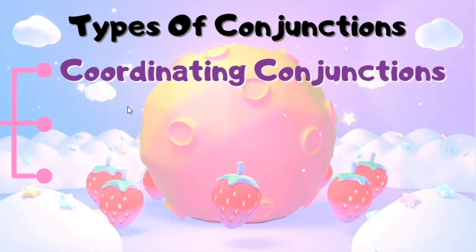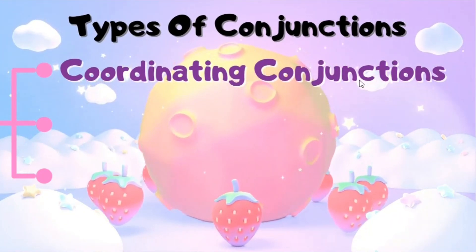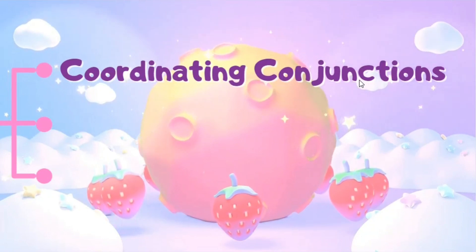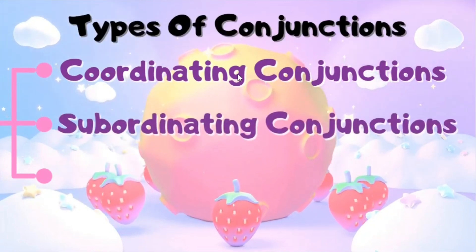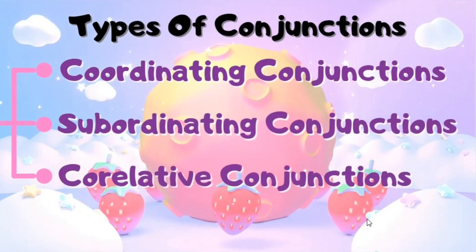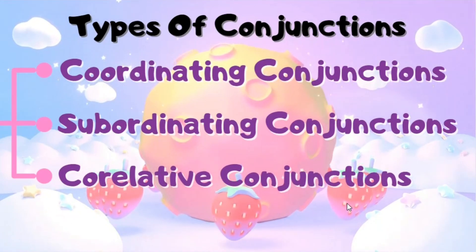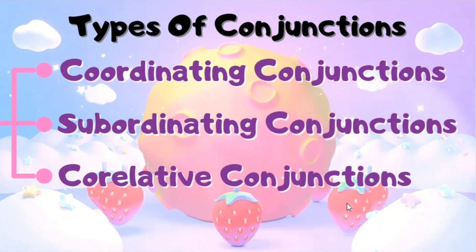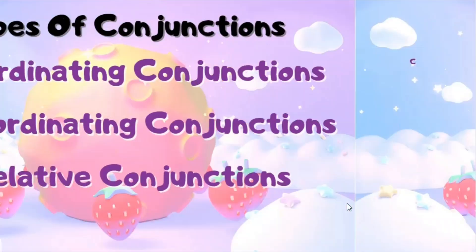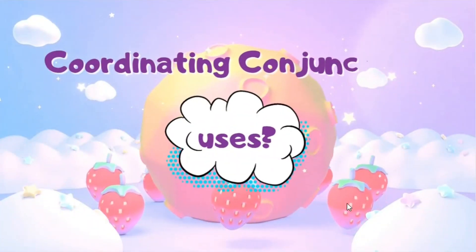The first type is coordinating conjunctions — this is the first type that we introduce to kids. Then the second type is subordinating conjunctions. Then correlative conjunctions. First of all, we will see what coordinating conjunctions are and what are the uses of them.